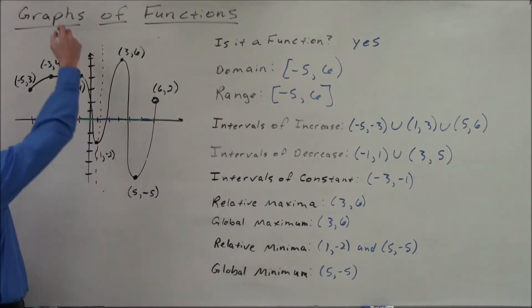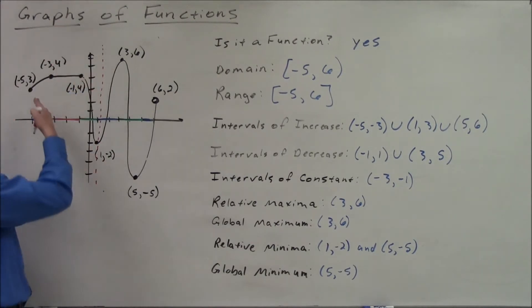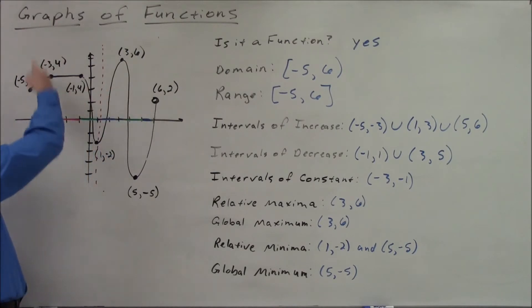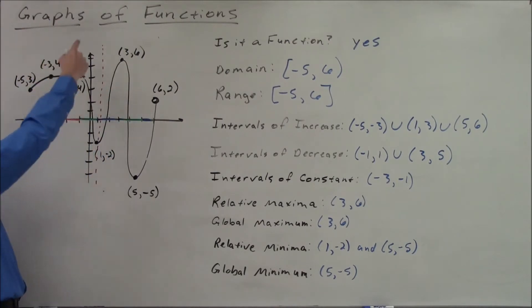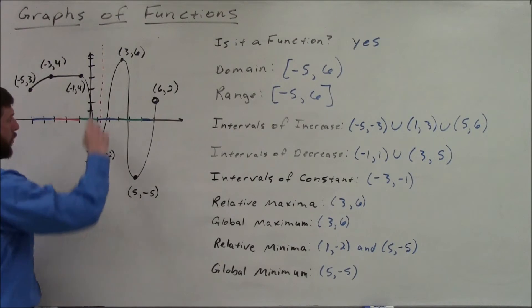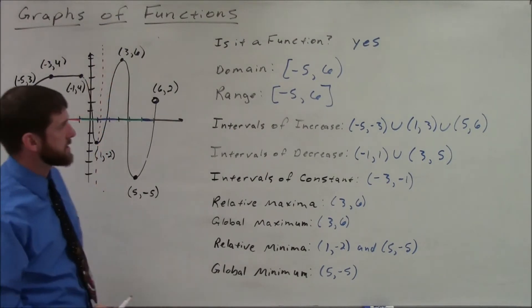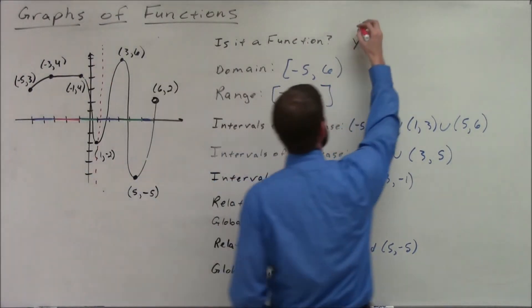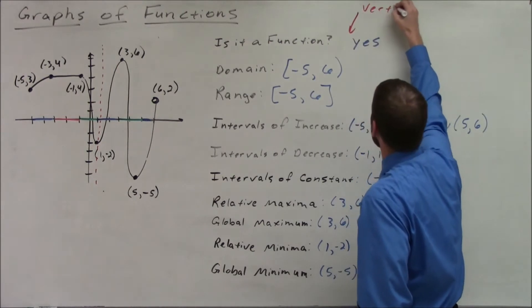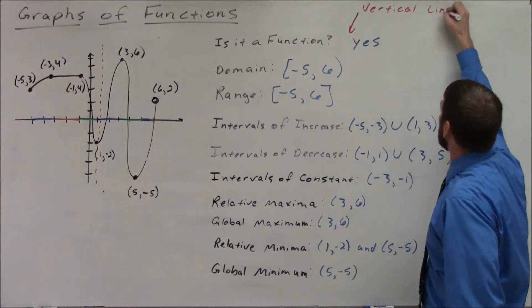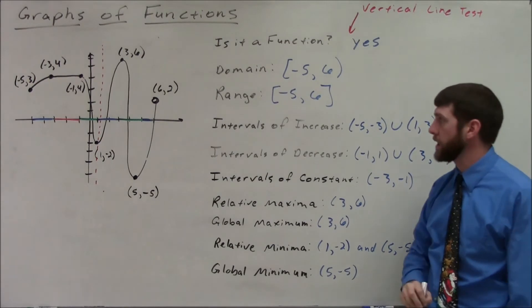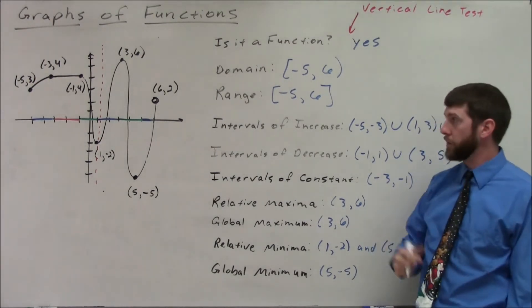Every single vertical line — because there are infinitely many between the endpoints — would only intersect the graph one time. So, since it passes the vertical line test, we can say this graph is the graph of a function.